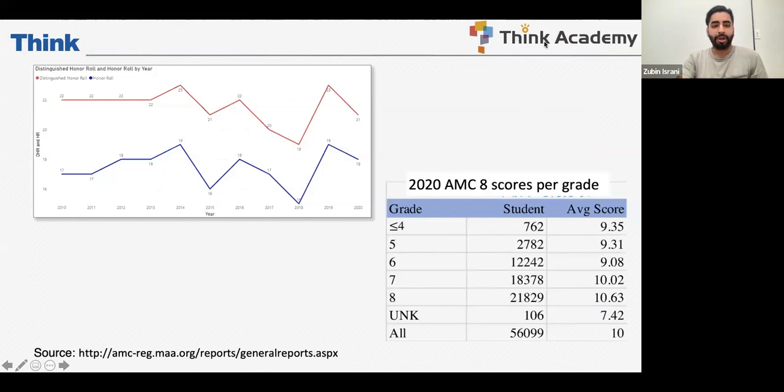We do expect this number to go up quite significantly. When you take a look at all of the years, you will see that the average scoring by each grade, and this is important if you want to know what you should be aiming for at a base minimum for your grade level. For below grade four, there were 762 students. The average score was about nine.